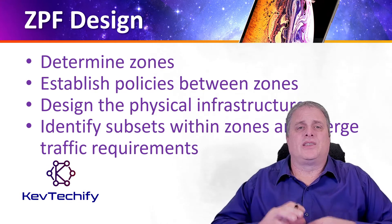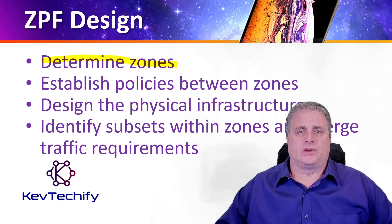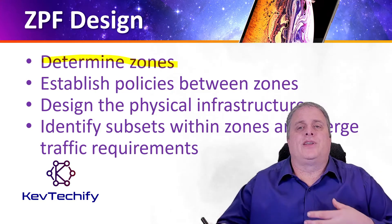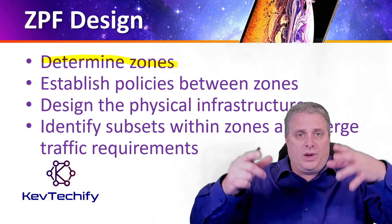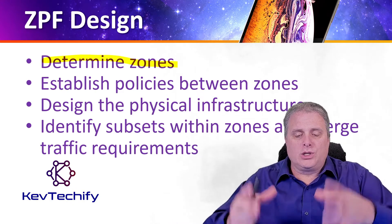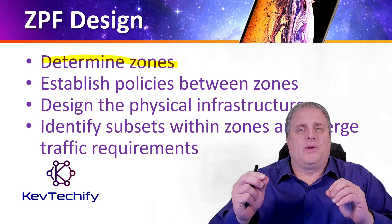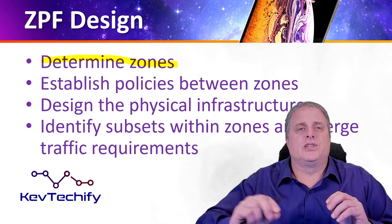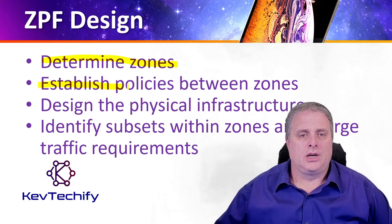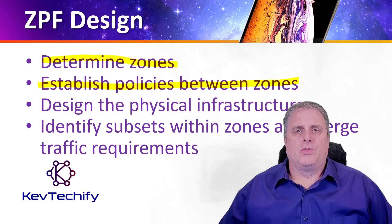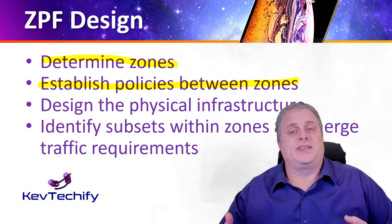Designing zone-based policy firewalls involves several steps. The first step is to determine the zones. A zone defines a boundary where traffic is subjected to policy restrictions as it crosses to another region of your network. A zone is a logical grouping of computers or functions on your network, and when traffic crosses to another zone, it is subjected to policy restrictions. Step two is to establish policies between the zones, defining the sessions that clients in the source zones can request from servers in the destination zone.